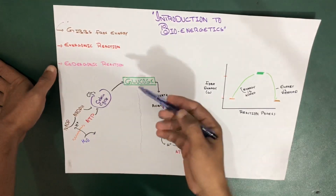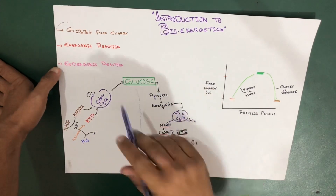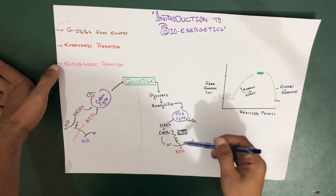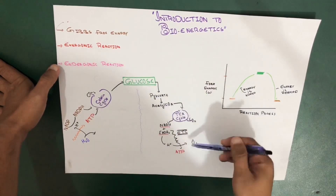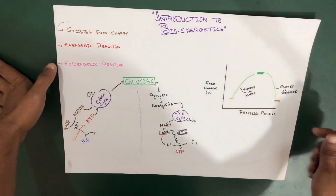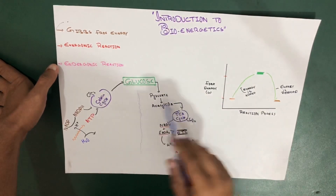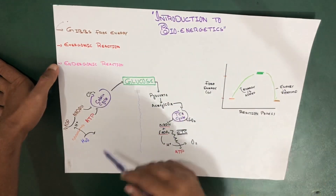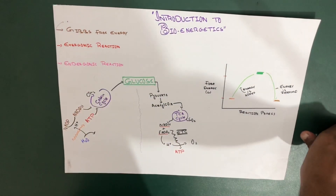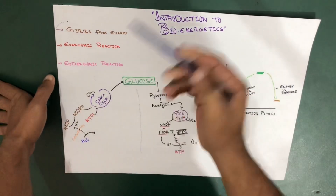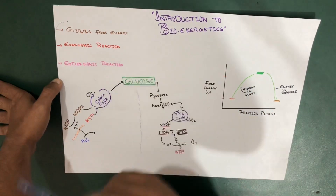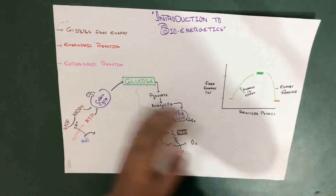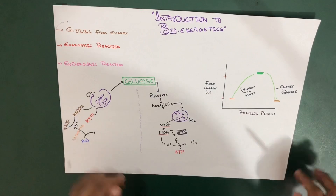We're going to start from photosynthesis — a very quick review of how glucose is made — and then how glucose is converted through cellular respiration into the form of ATP and how we utilize it. After that, we'll be comparing charts on how energy is reserved, and further we're going to talk about Gibbs free energy, exergonic reactions, and endergonic reactions.